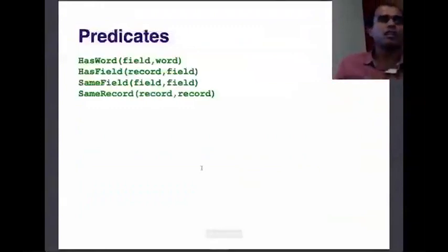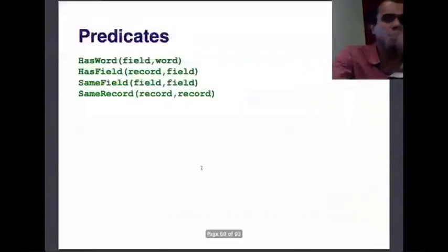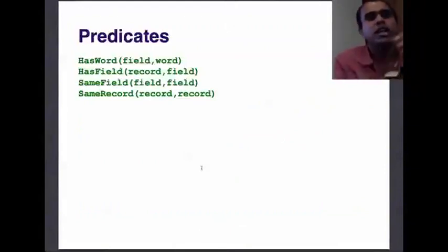If you were to model this problem, what do we need? We need the predicates, we need the rules, and then we need the weights, which could be learned from data. Let's try to come up with the rules. What are the predicates? One way is that you can say for every field, HasWord(field, word)—whether the field author has a particular word or not. It's true if the particular word is there in that field, false otherwise.